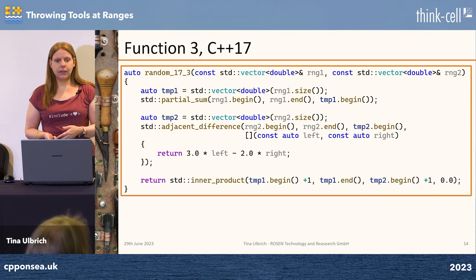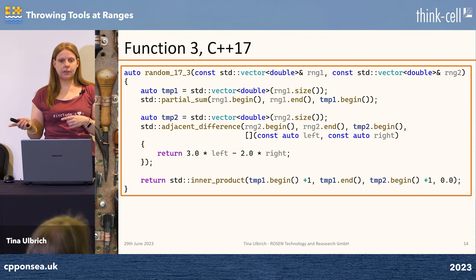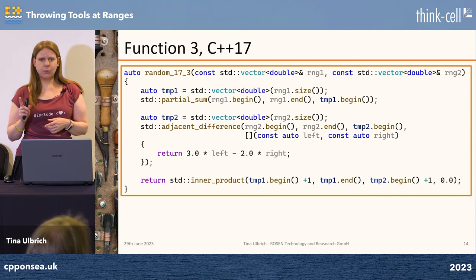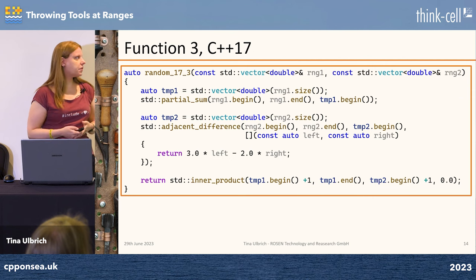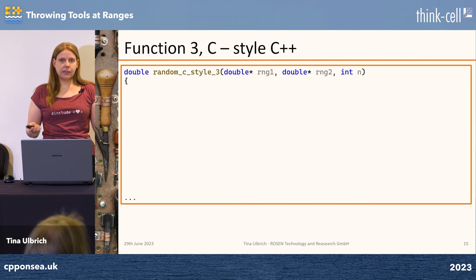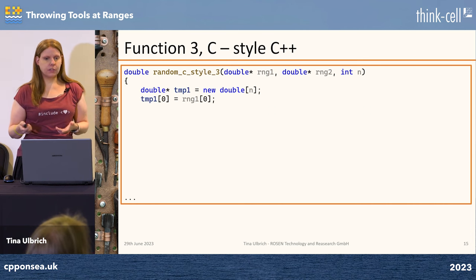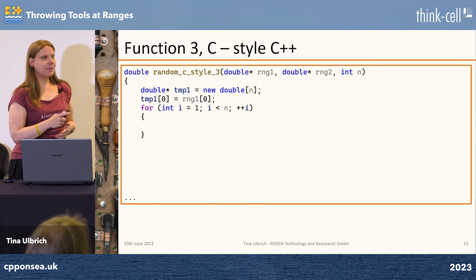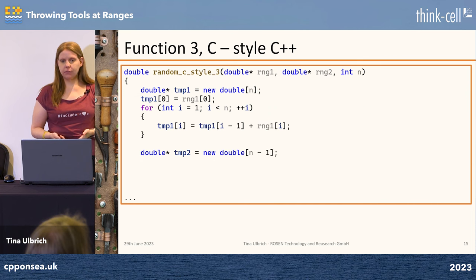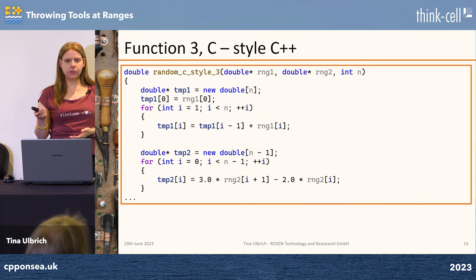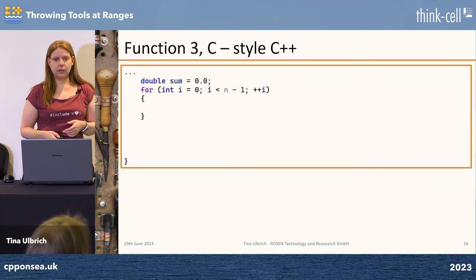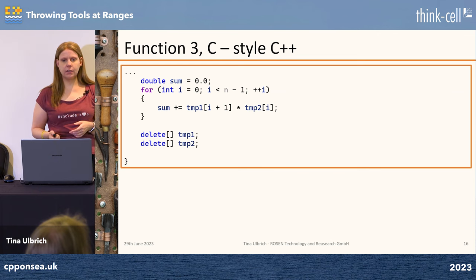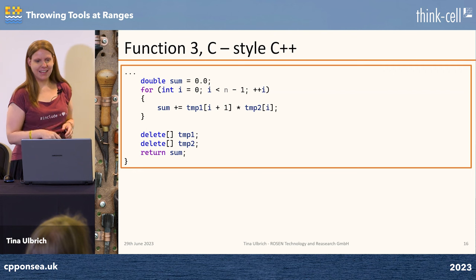Doing the same calculation, and then we also have inner_product in the standard library — the iterator-based version. As far as I know, we're not having a range-based version for that one. The C-style version is a little bit bigger, same fashion: some temporary output on the heap with new, then index loops doing the calculations — first the partial sum, then the adjacent elements calculation, then the inner product. I need to delete my temporaries — that's very important — and then I return the sum.